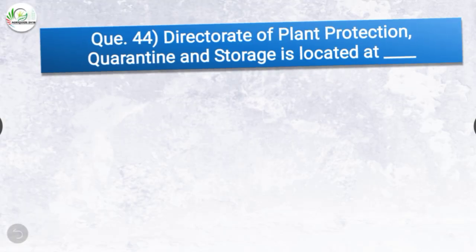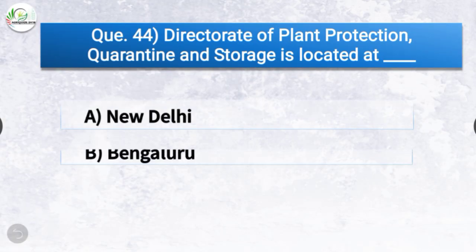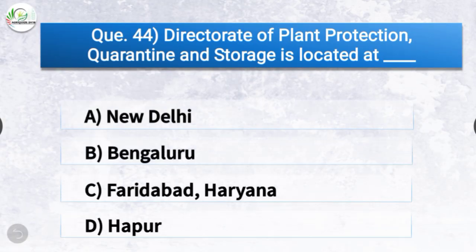Question number forty-four: Directorate of Plant Protection, Quarantine and Storage is located at dash. The options are New Delhi, Bengaluru, Faridabad-Haryana, or Hamirpur. The correct answer is option C, Faridabad, Haryana — the Directorate of Plant Protection, Quarantine and Storage is located at Faridabad, Haryana.